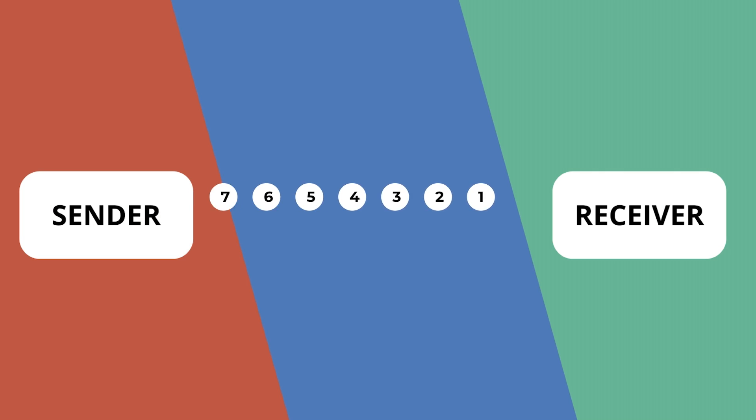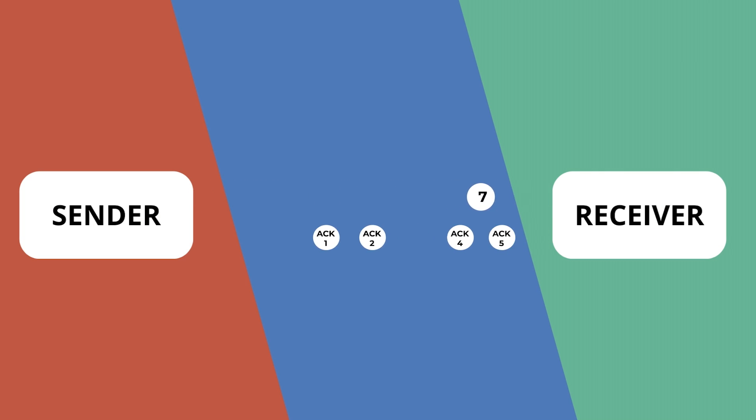Now let's look at how this applies to RTMP. RTMP describes how to send video data over TCP. If the connection is reliable and fast, everything is fine — the RTMP encoder sends packets out and gets back an ACK for each one. But what happens if there's a glitch in the network? If packets start getting dropped or delayed, like on a mobile network, the encoder sends a packet that gets delayed past the retry timer, so it keeps trying to send that packet again and again.